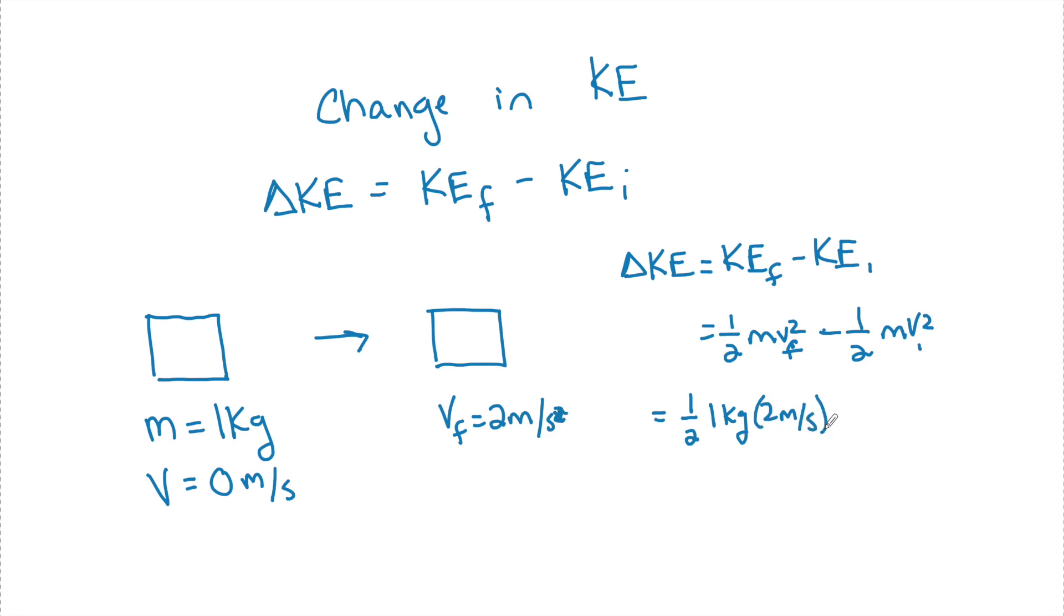That needs to be squared minus 0. And I made the 0 because the initial velocity was 0 meters per second. We love those. So now we can say 0.5 times 4, the change was 2 joules. That was the change in kinetic energy.